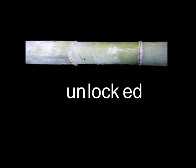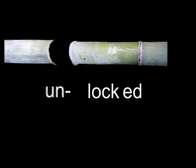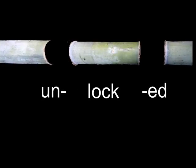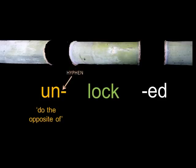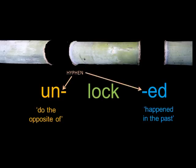Consider the word 'unlocked' in English. This is one word describing what someone did to a door in the past. However, it is made up of three different parts that each have their own meaning. The main part of the word is 'lock' in the middle. The 'un' part of the word means something like 'do the opposite of' — notice that we have drawn a hyphen to show this attaches to the front of the main part of the word. The 'ed' part of the word tells us that the action happened in the past, with a hyphen to show that this comes after the main part.